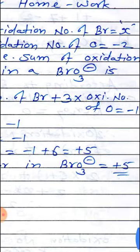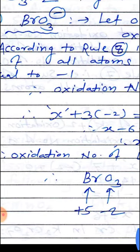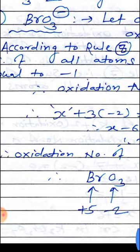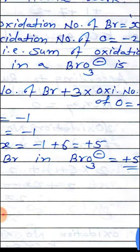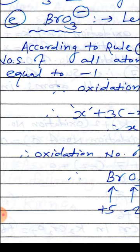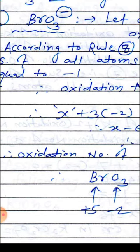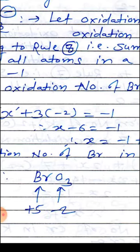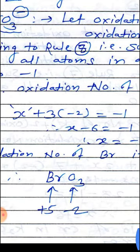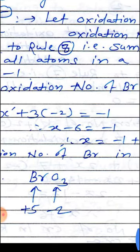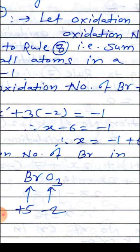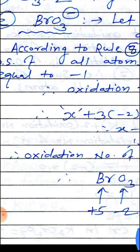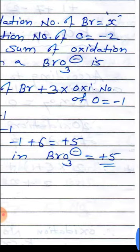Next, E: BrO₃⁻. The oxidation number of oxygen equals minus 2 always. BrO₃⁻ is an ion, so we apply rule number 8: the sum of oxidation numbers of all atoms in BrO₃⁻ equals minus 1 (the net charge). The equation: oxidation number of bromine plus 3 into (oxidation number of oxygen) equals minus 1. Therefore x plus 3 into (−2) equals minus 1, so x minus 6 equals minus 1, giving x equals plus 5. The oxidation number of bromine in BrO₃⁻ equals plus 5.